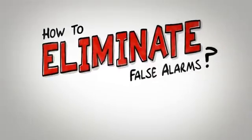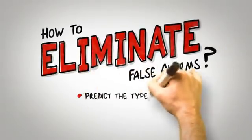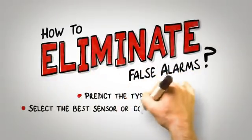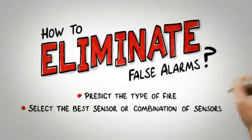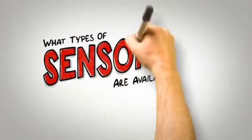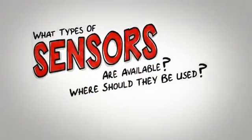The key to eliminating false alarms lies in predicting the type of fire that may occur and selecting the best sensor or combination of sensors to suit that environment. This will go a long way to improving the accuracy of a fire system's response. So what types of sensors are available and where should they be used?